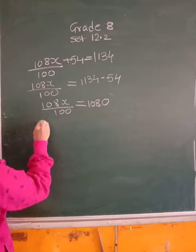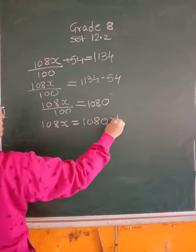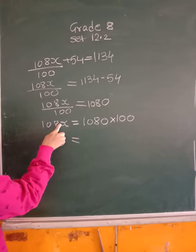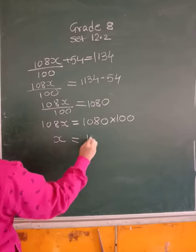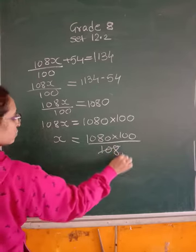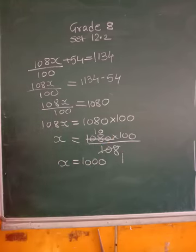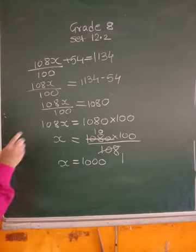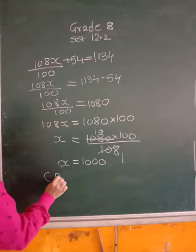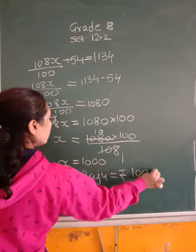Now we have to find the value of X. So 108X will be equal to 1080. This is in division, it will go in multiplication into 100. I have to find X. X will be same side. Between 108 and X there is multiplication, so it will go in division. So it is 1080 into 100 divided by 108. 108 into 10 is 1080, 10 into 100, X is equal to 1000. And we have assumed cost price of Raju itself as X.